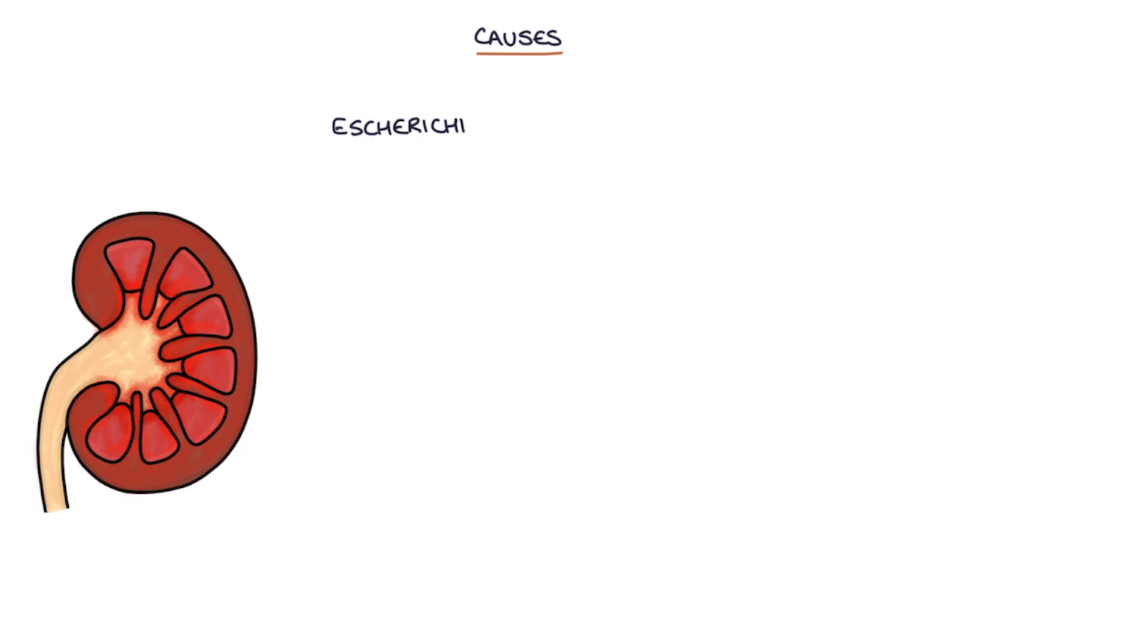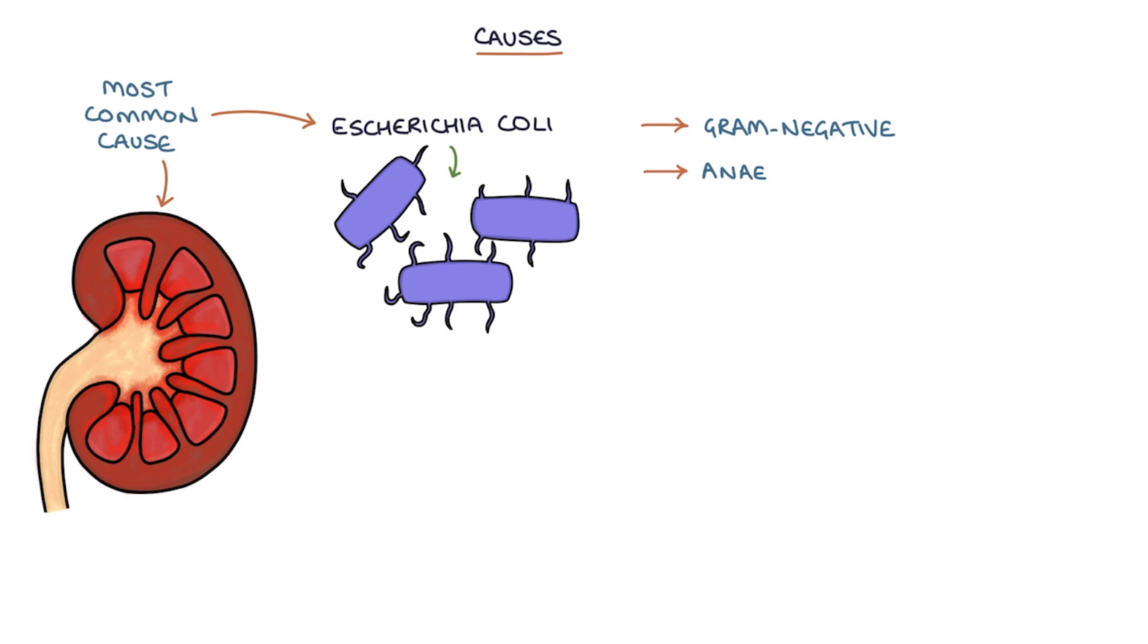Let's talk about the causes of pyelonephritis. Escherichia coli is a bacteria that's the most common cause of pyelonephritis as with lower urinary tract infections. E. coli are gram-negative, anaerobic, rod-shaped bacteria that are part of the normal lower intestinal microbiome. E. coli are found in feces and can easily spread to the bladder and then up through the ureters into the kidney.